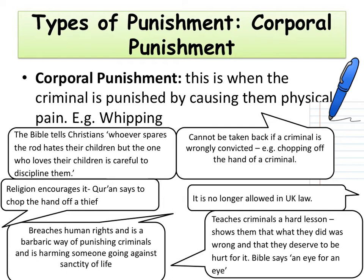One argument is that corporal punishment breaches human rights and is a barbaric way of punishing criminals — it's harming someone, going against the sanctity of life and teachings like your body is a temple of the Holy Spirit. Corporal punishment cannot be taken back if a criminal is wrongly convicted — for example if you've chopped off someone's hand, they can't miraculously grow it back when you find out they were innocent. Corporal punishment is no longer used or allowed in the UK. Finally, corporal punishment teaches criminals a hard lesson, showing them what they did was wrong. The Bible says an eye for an eye, and it's likely criminals see the error of their ways quickly because they're scared of that pain happening again.